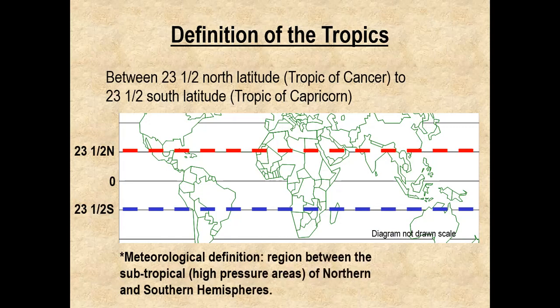First, we're going to start off with the definition of the tropics. If you look on a world map or a globe, the tropics are generally that area on the Earth's surface extending between 23.5 degrees north latitude at the Tropic of Cancer to 23.5 degrees south latitude at the Tropic of Capricorn. They are marked on the map — 23.5 degrees north, zero represents the equator, and 23.5 degrees south with blue dashed lines.